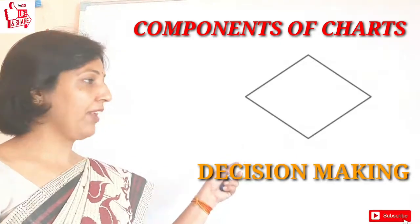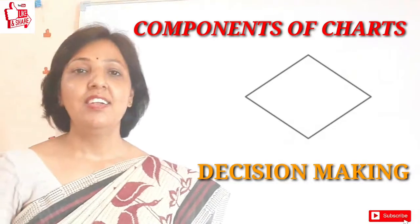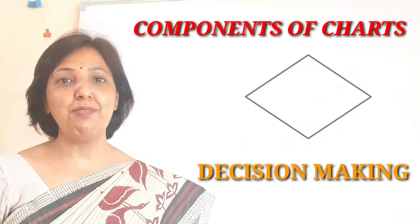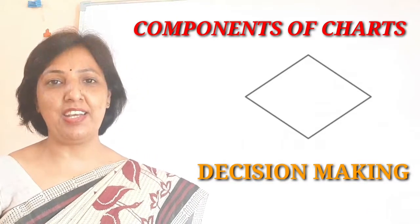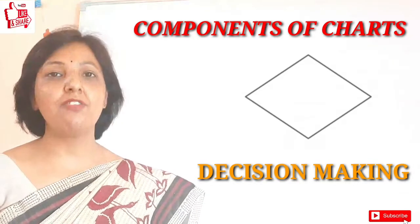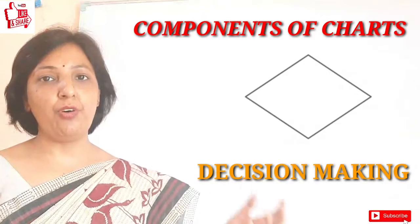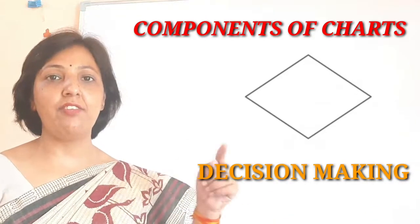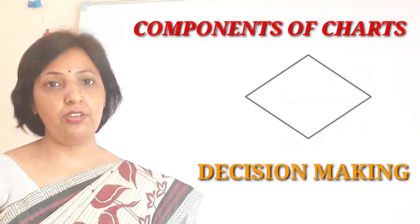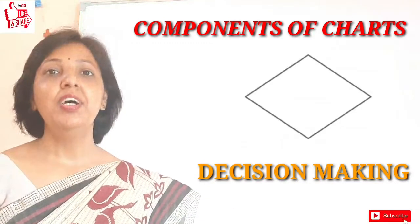The next, this shape, the diamond shape, is representing you the decision making, the decision making where we have to make decisions. It means whether a thing, if I want to compare two numbers, I can say whether one number is greater than the second one, yes or no.